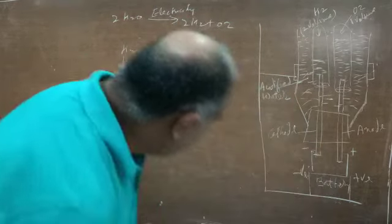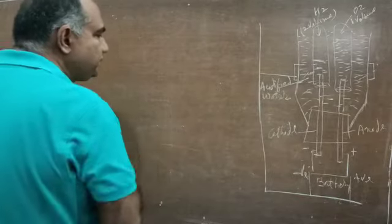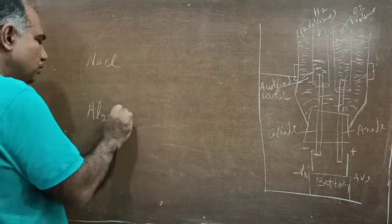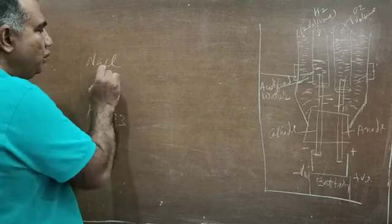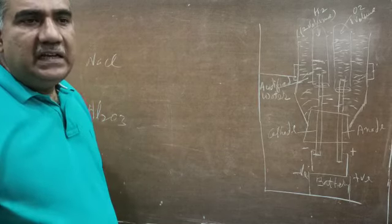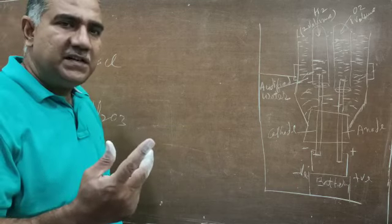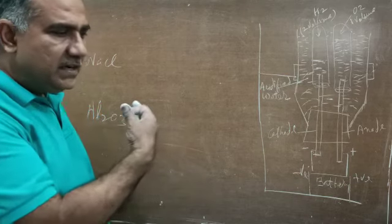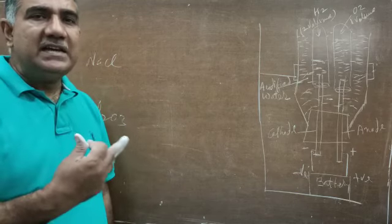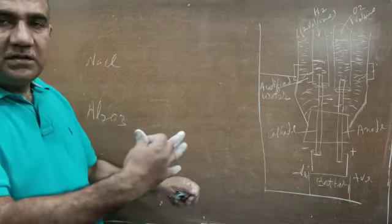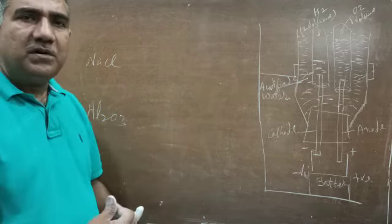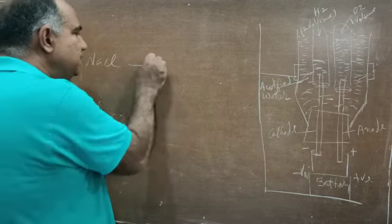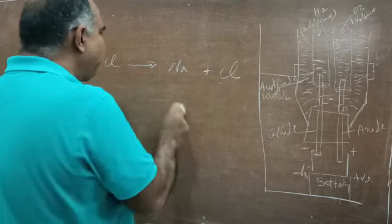Now we look at two more substances that can undergo electrolytic decomposition: NaCl (sodium chloride) and Al₂O₃ (aluminum oxide). Both need to be taken in molten state. If dissolved in water, you would get metal hydroxide instead of the metal. So we melt them and pass electricity through them. For NaCl, the products are Na and Cl₂.